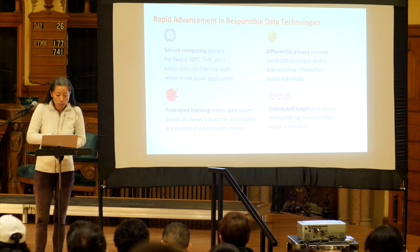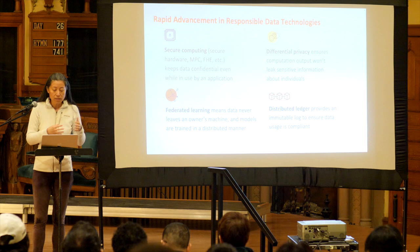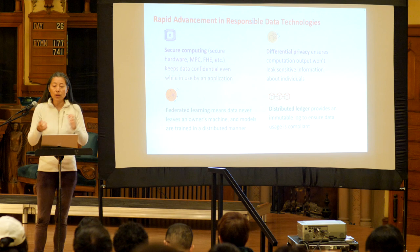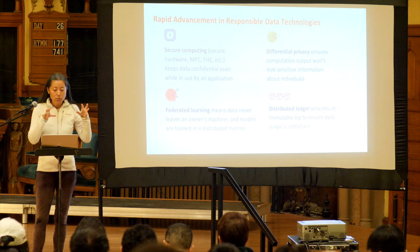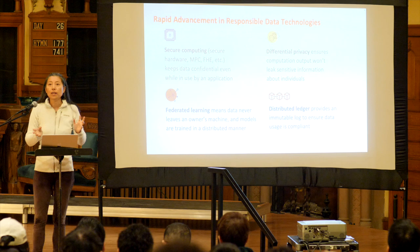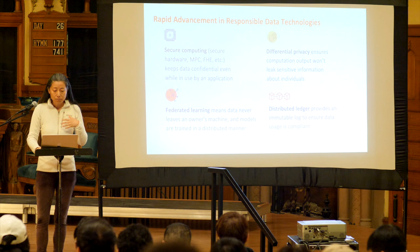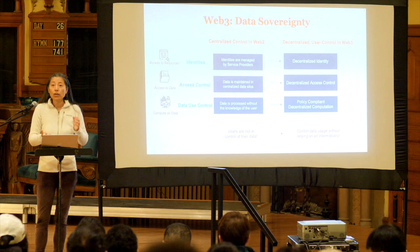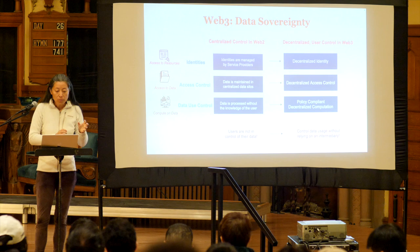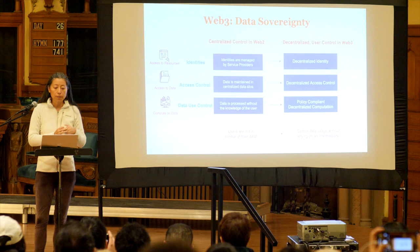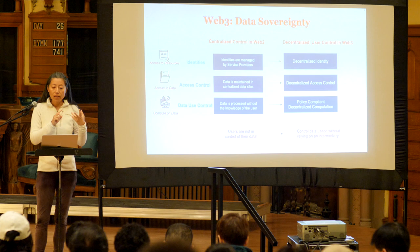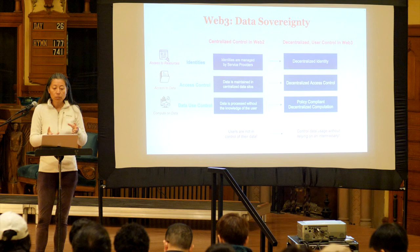These technologies help protect the computation process from leaking sensitive information. Differential privacy helps protect the computation output from leaking sensitive information about the inputs. Federated learning helps keep data on devices while enabling distributed or decentralized model training and data analytics. Distributed ledger can help provide an immutable log for users' data rights and how data has been utilized. When we put all this together with Web3, we want to enable a new paradigm that we call data sovereignty — in contrast to Web2, where users are not in control of their data due to centralized platform control.